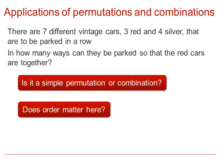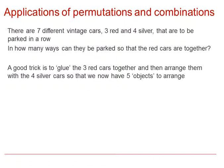Order does not matter other than that constraint. A good trick we can use here is to, in effect, glue the three red cars together, and then arrange them with the four silver cars so that we have five objects to arrange — rather than thinking of seven objects and trying to remove the options where the red cars are not together. The boxes or slots would now look a little bit like this, with the three red cars glued together being one object, which can of course be moved around.